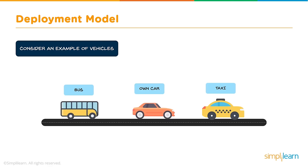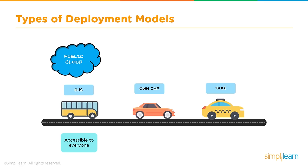It will be easy for me to explain and also easy for you to understand if I walk you through this example. Consider the different types of vehicles we use to commute from one place to another. For example, if I want to travel, I can pick a bus which is accessible to anyone. I get in, I pay for the seat that I occupy, and I pay for the time that I'll be traveling in it. Cost is very less here.